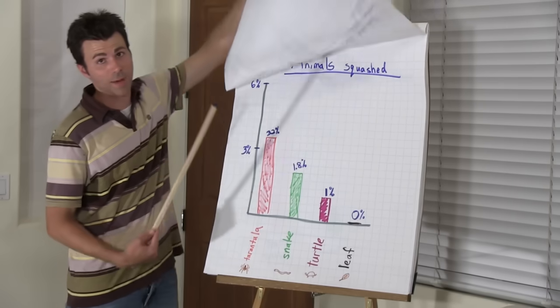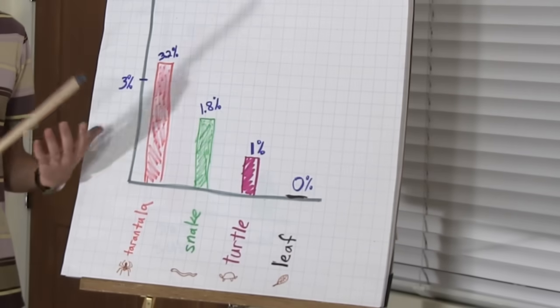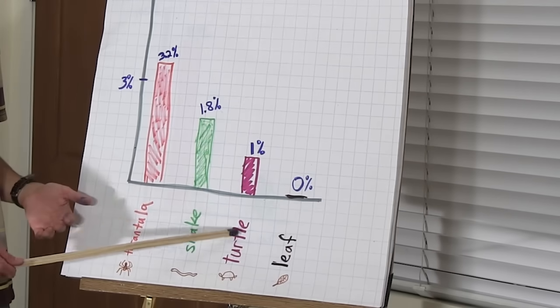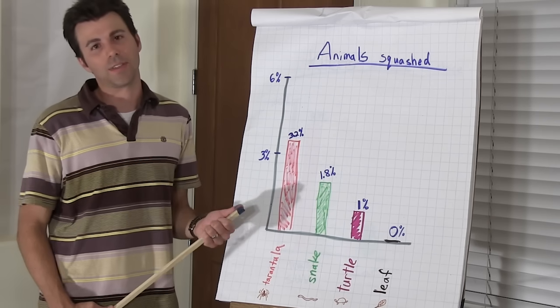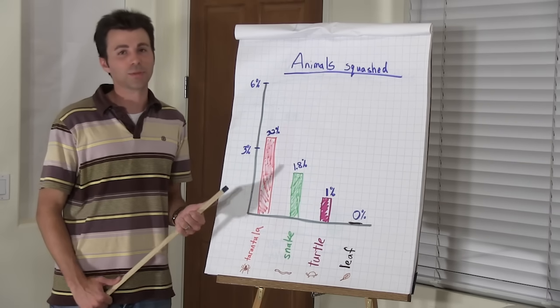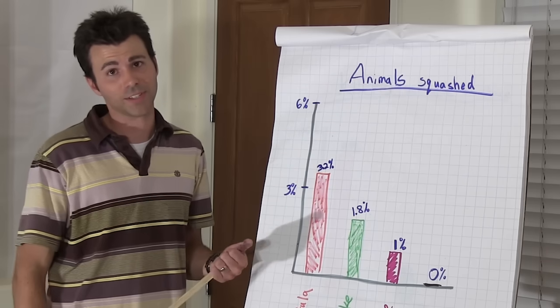So now if we take this 6% and we break it down, tarantulas definitely got hit the most. Next was snakes and then turtles. So as you can see right here, we have to reject our hypothesis. Snakes actually get run over more than turtles, so don't believe everything you read.